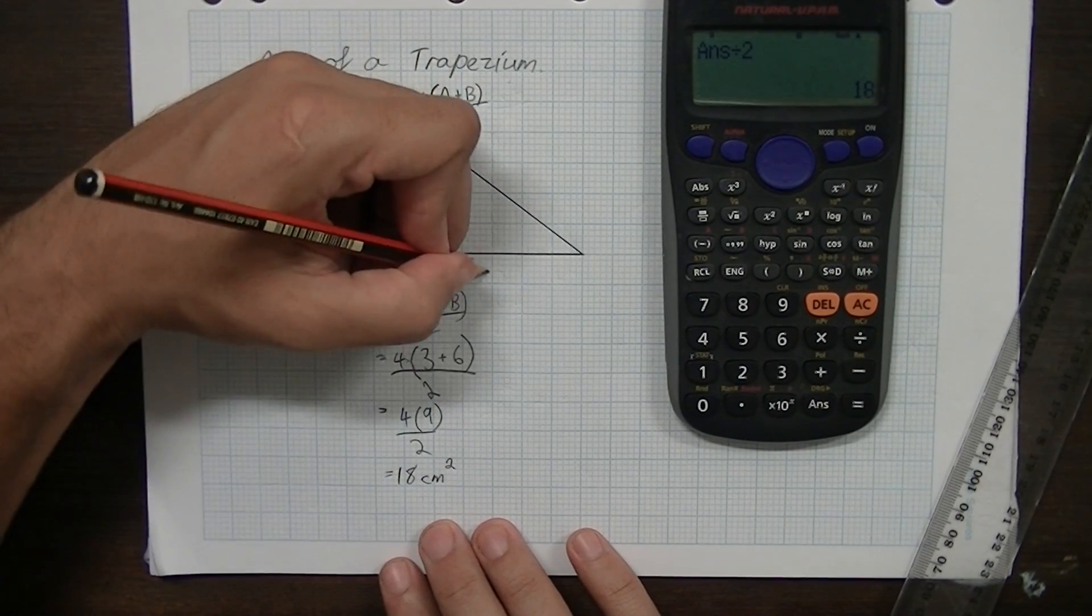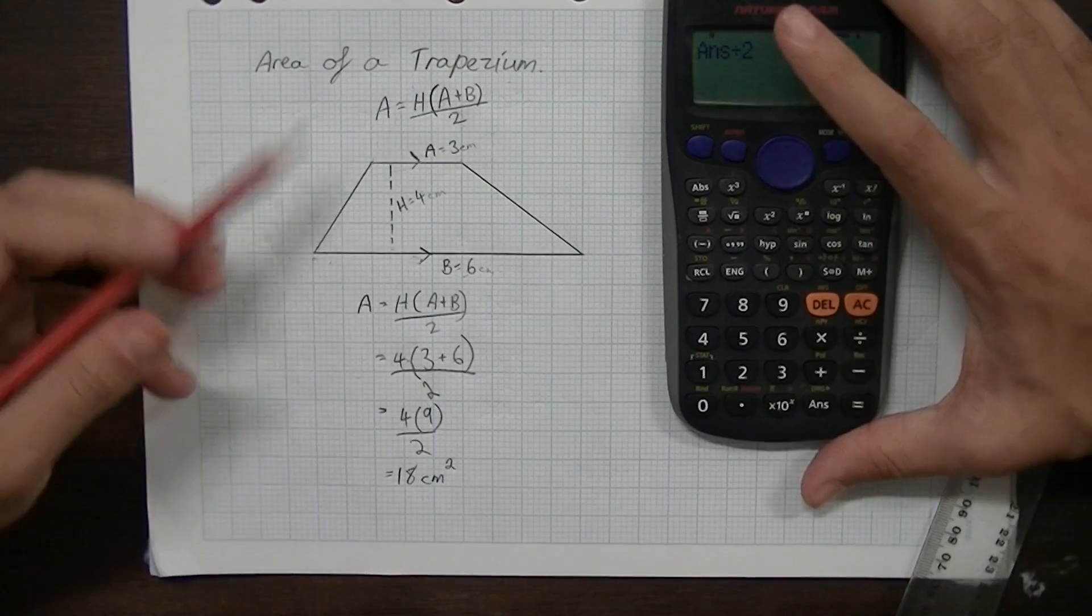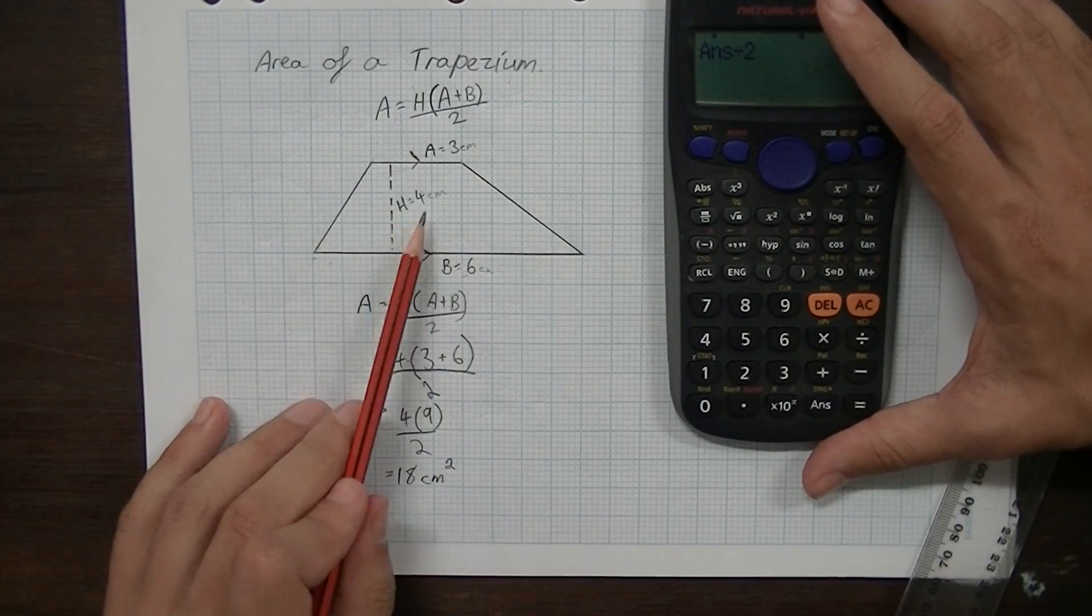And you'll end up with an answer of 18 centimetres squared. Assume they're centimetres there. So there's the area of that trapezium.